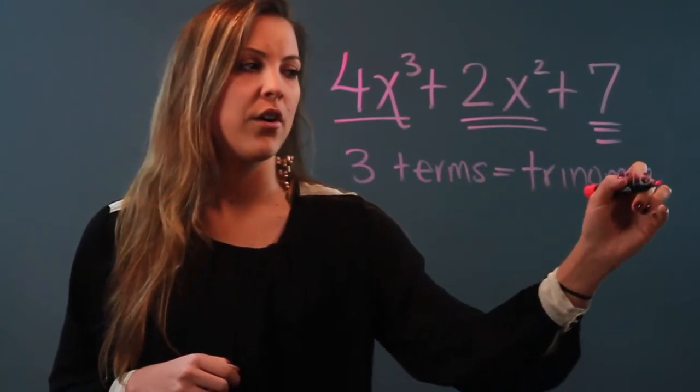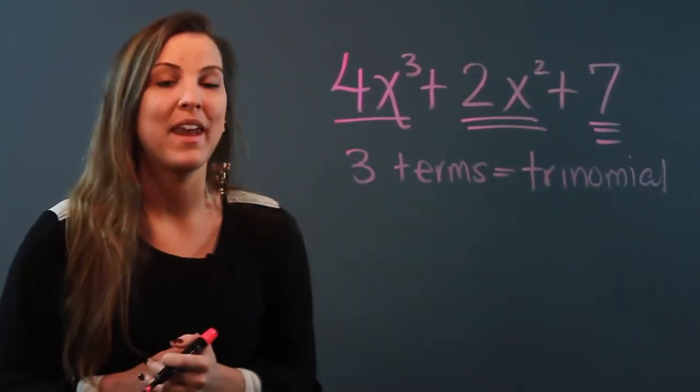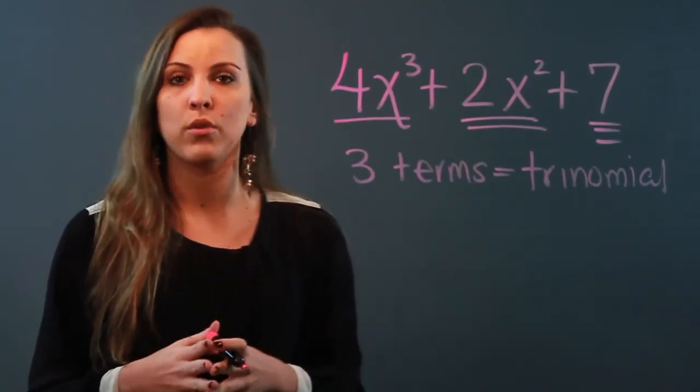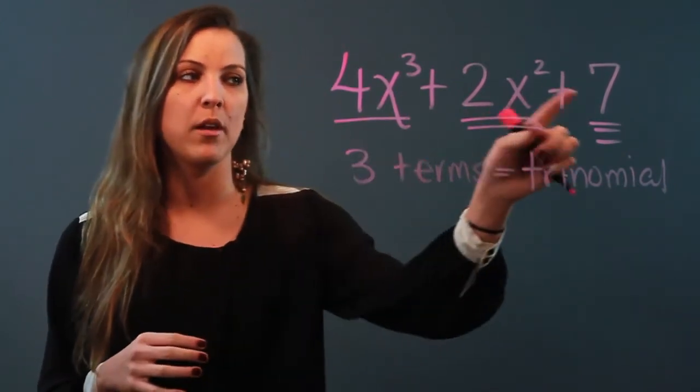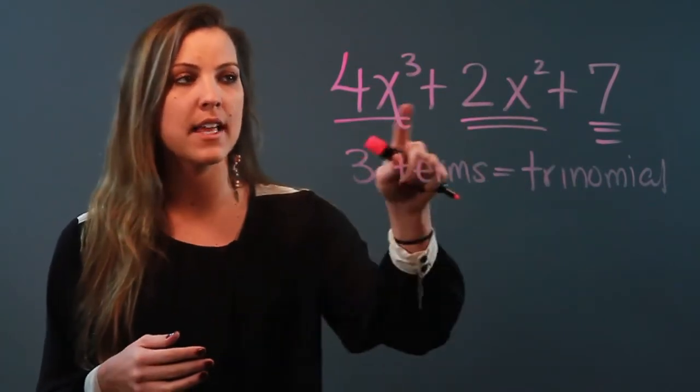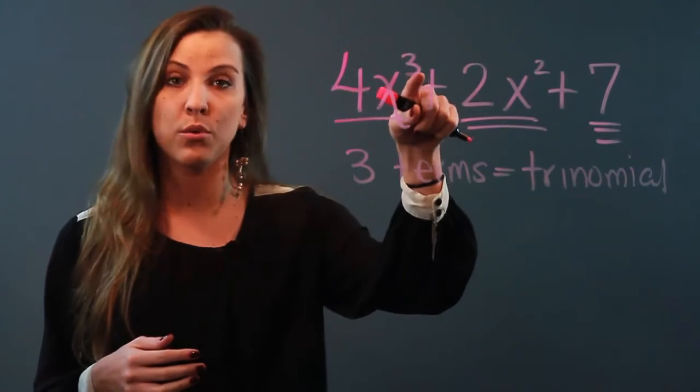So we've got the terms down. Now we need to see the degree of the polynomial. The degree of a polynomial, when it's in one variable, which this one is, is the highest exponent that it has.